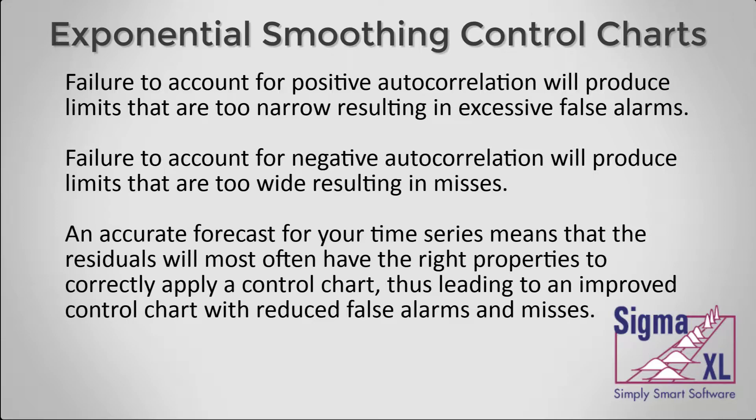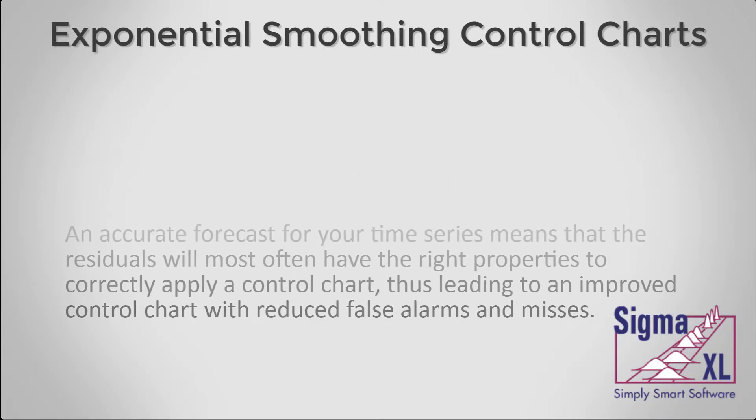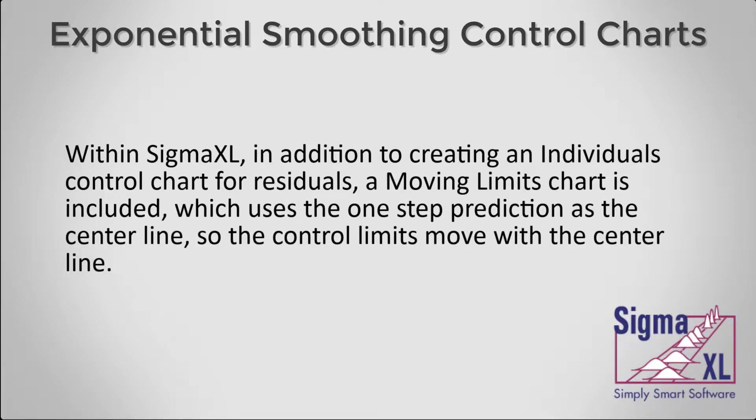An accurate forecast for your time series means that the residuals will most often have the right properties to correctly apply a control chart, thus leading to an improved control chart with reduced false alarms and misses. Within Sigma Excel, in addition to creating an individuals control chart for residuals, a moving limits chart is included, which uses the one-step prediction as the center line, so the control limits move with the center line.